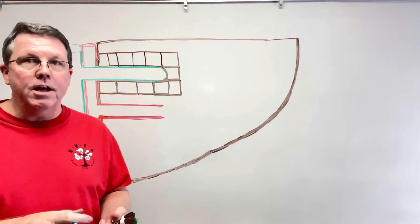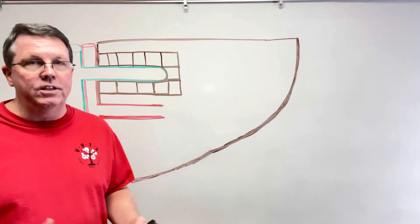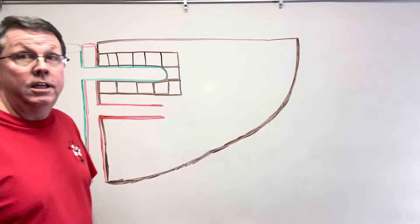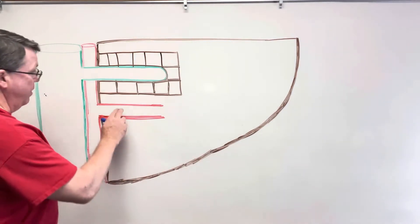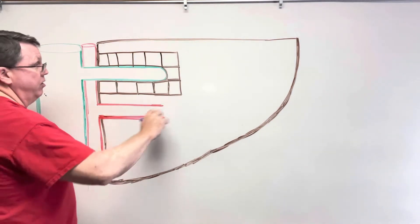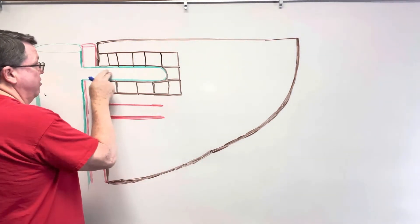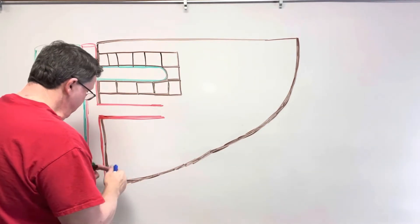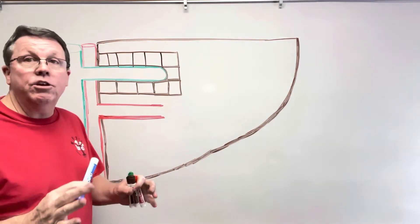Hi everybody. Today we're going to be talking about how thyroid hormone affects your liver. What we have here is a really ugly drawing of a liver. I have blood vessels here that go into the liver, a bile duct right here, and then we have thyroid hormones.